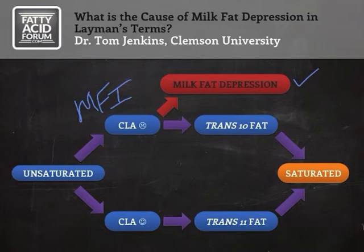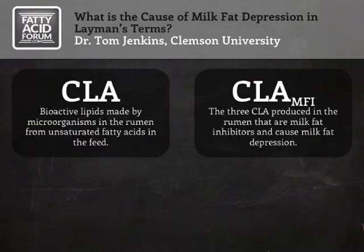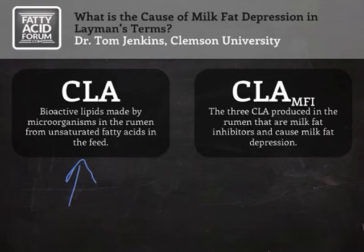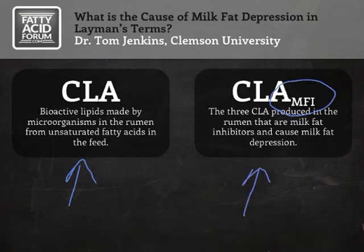Our goal as animal nutritionists is to manage the rumen environment through nutrition to limit the production of these milk fat inhibiting CLA isomers and avoid milk fat depression. To summarize: CLAs are bioactive lipids made by rumen microorganisms from unsaturated fatty acids we feed. Whether or not fat supplements are fed doesn't matter — there's enough unsaturated fatty acids in forages and grains to supply the substrate for making these CLAs. The three CLA MFIs known so far are produced in the rumen and act as milk fat inhibitors that get into the bloodstream and greatly reduce milk fat synthesis from acetate.